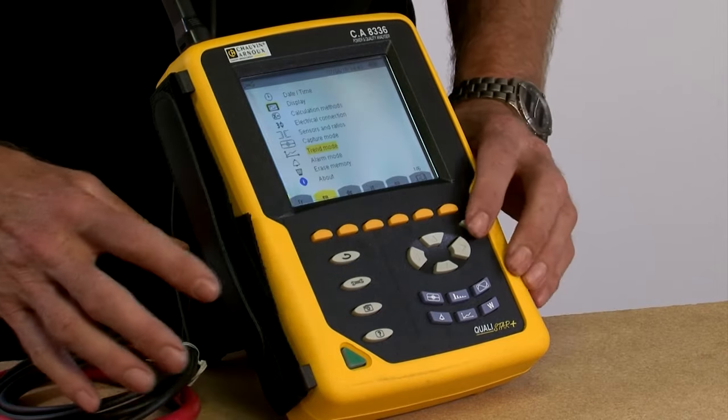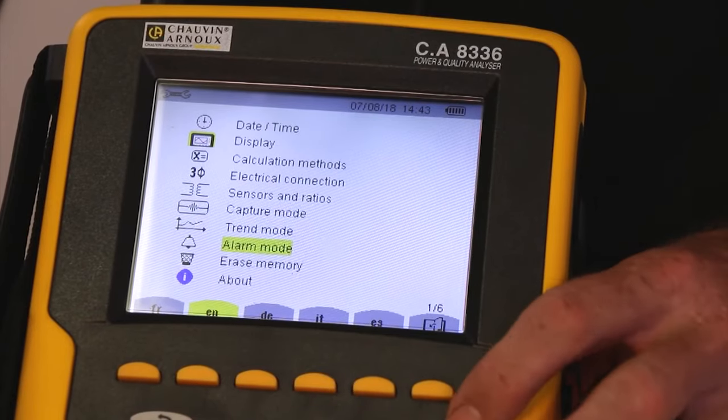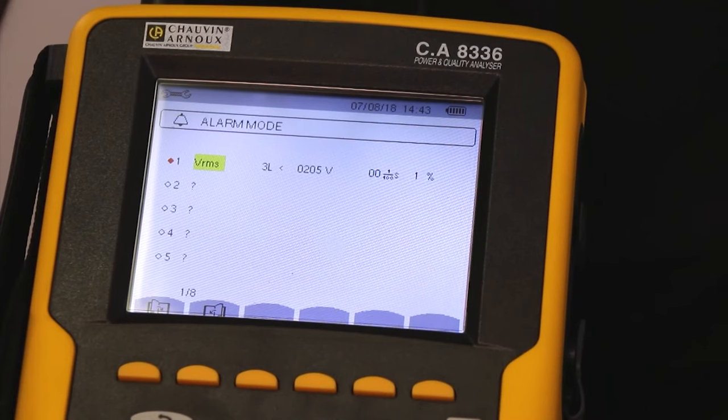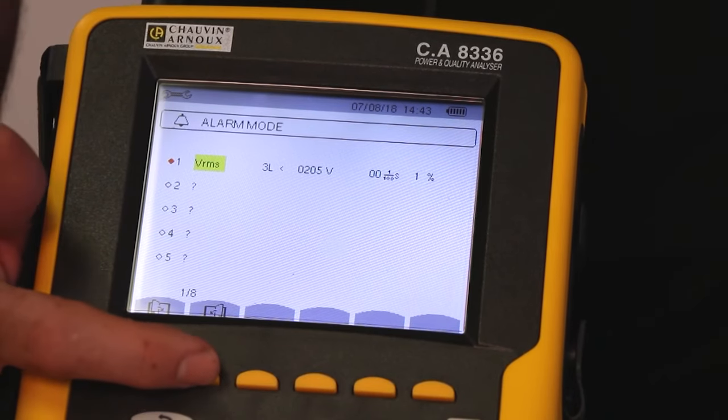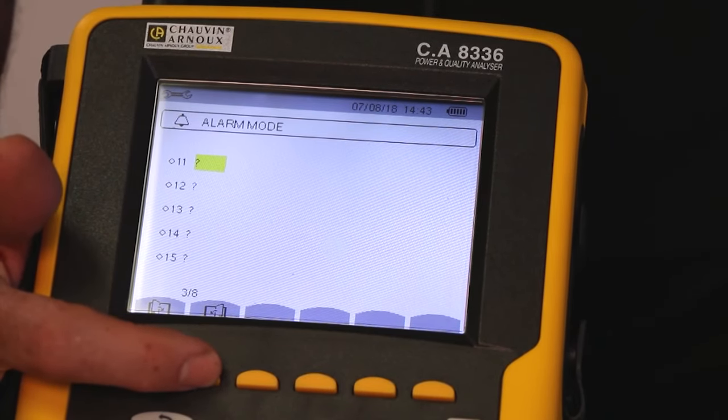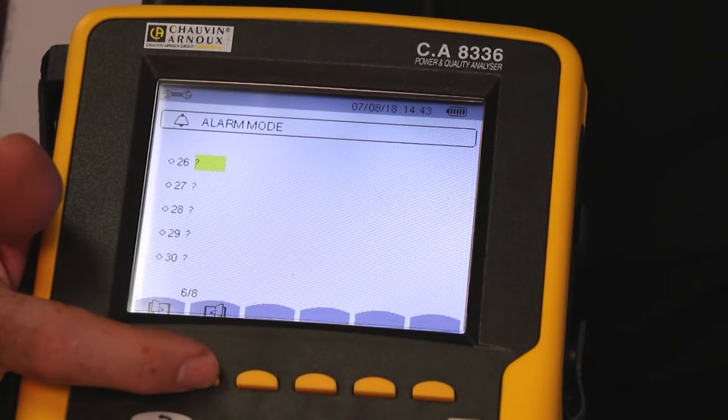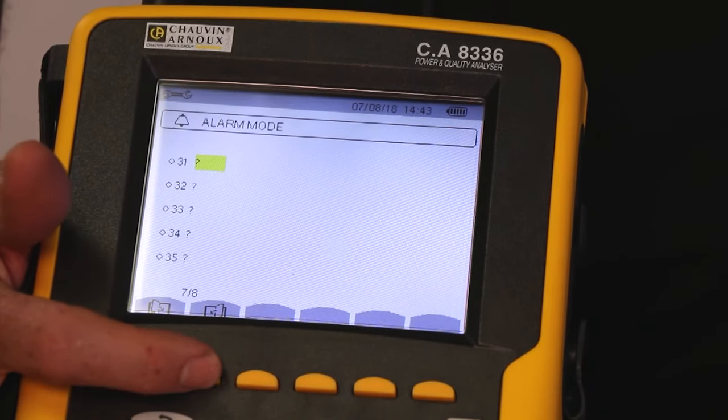The next position down is alarm mode. So I press the down key, hit enter, and here we enter the alarm mode setup screen. I have 40 different alarms that I'm able to set. And you can see here that by using the fast key, we can go to those different pages of alarms.